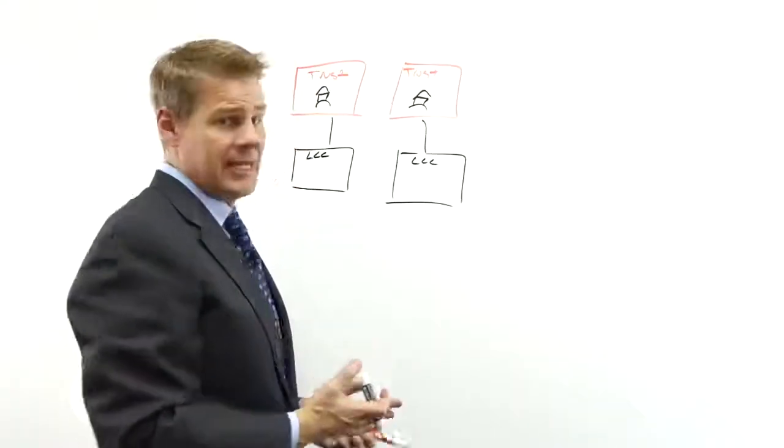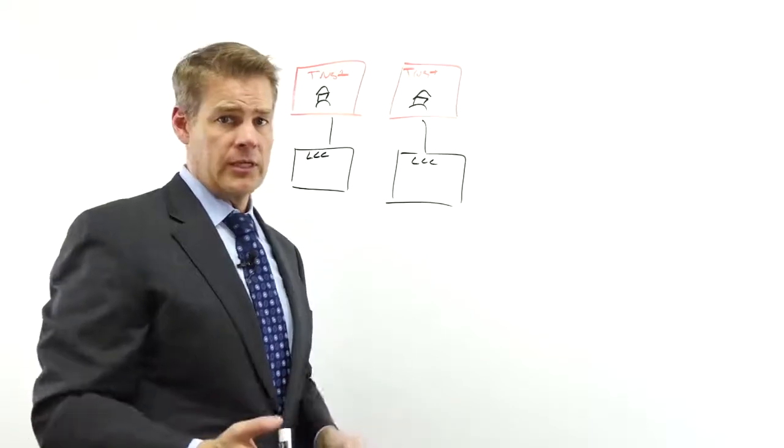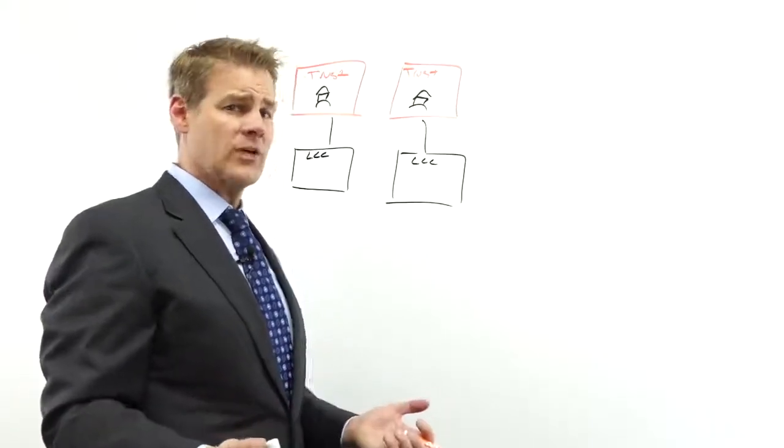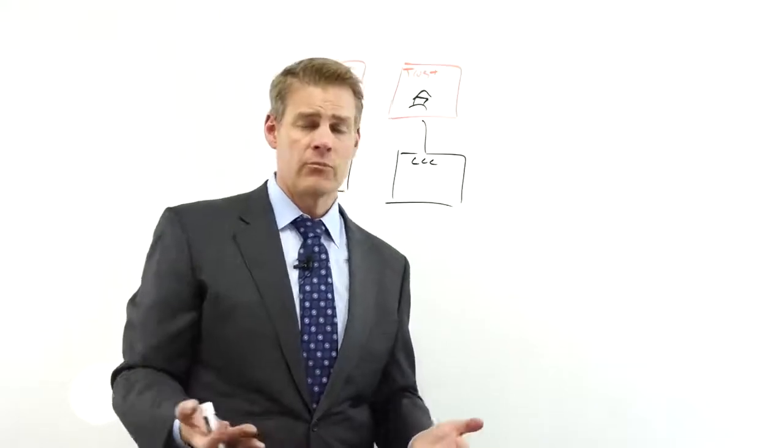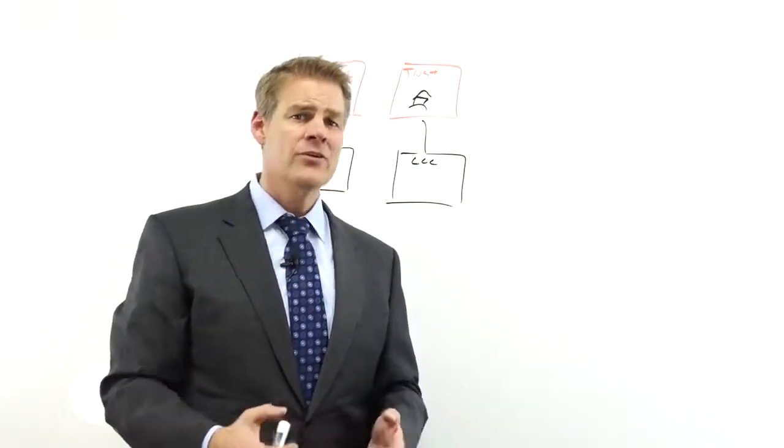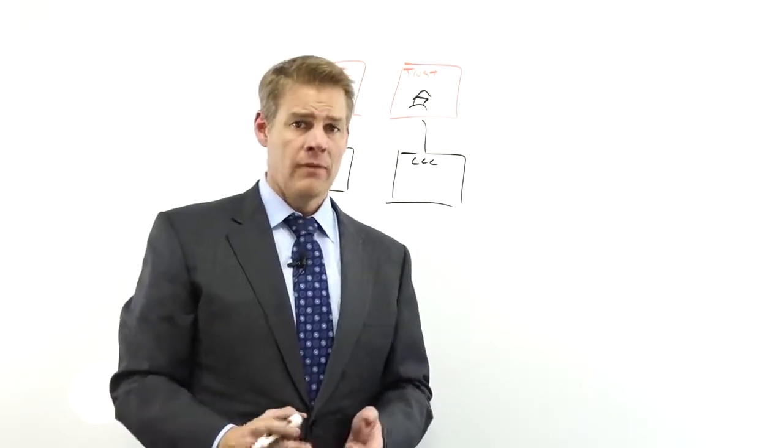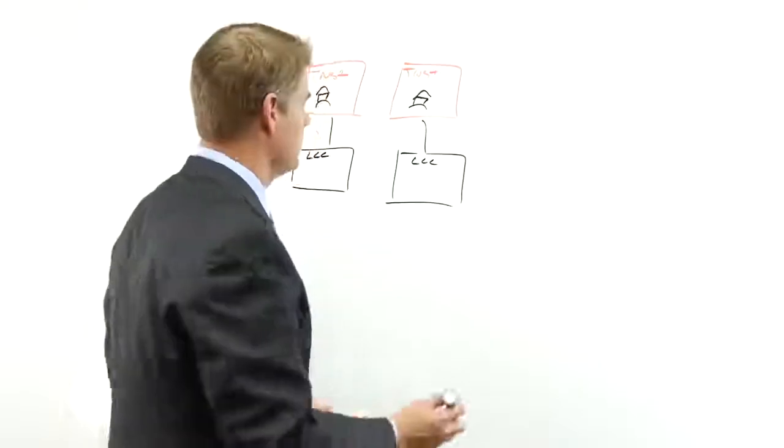Now, typically that's how I'm going to recommend someone create or set up their structures and their land trusts and their LLCs. But on occasion, maybe you're investing in a state where the property values are about $35,000, $40,000. And so then you're considering grouping properties together.